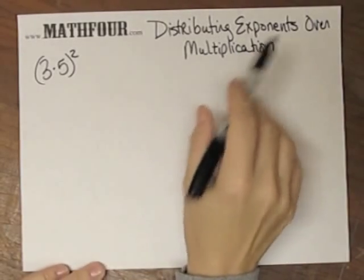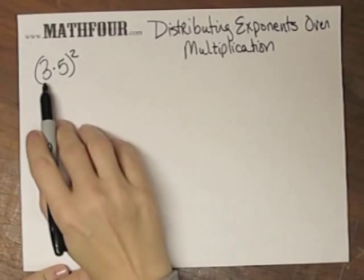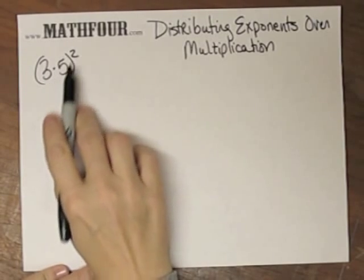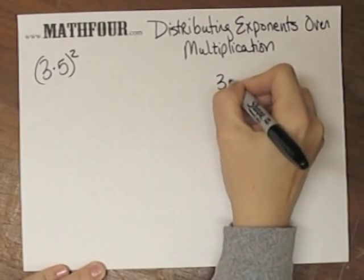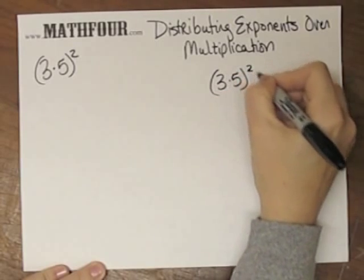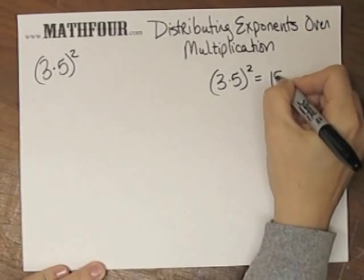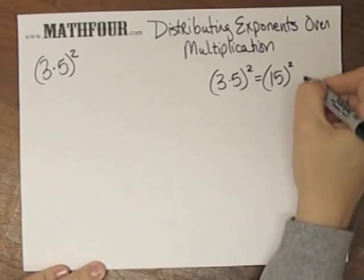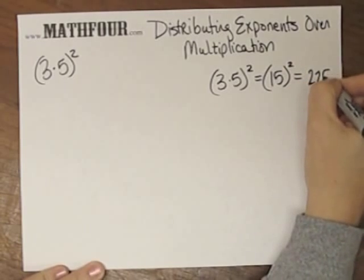This is how to distribute exponents over multiplication. In the case of something like 3 times 5 squared, you would want to multiply 3 times 5, so you get 15, and when you square that, then you get 225.